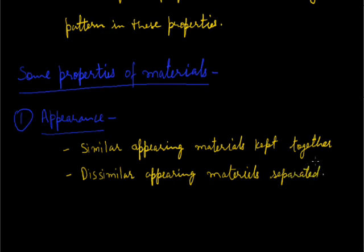For example, metals like iron, copper, aluminum, these are kept together because of their metallic luster, their shining property and wood is kept separately from these materials because wood is not lustrous.